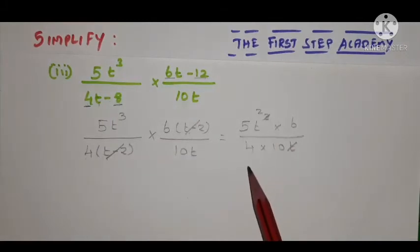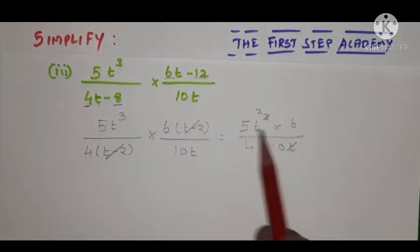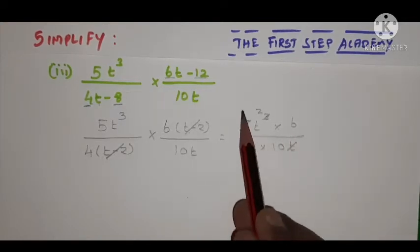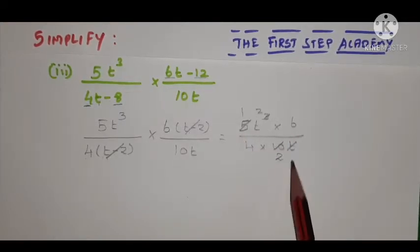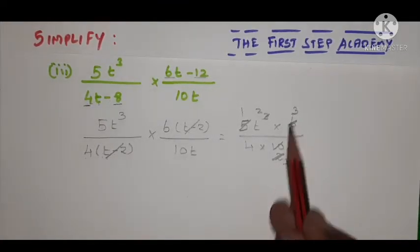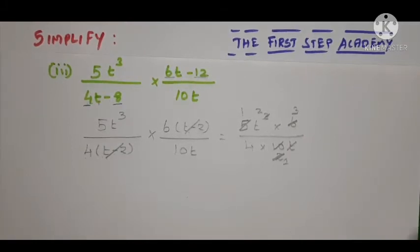Now look at the constants: 2 fives are 10. Same way, 2 and 6 will cancel—3 twos are 6. So all the cancellation has been done. Now we take all the remaining values and write them.